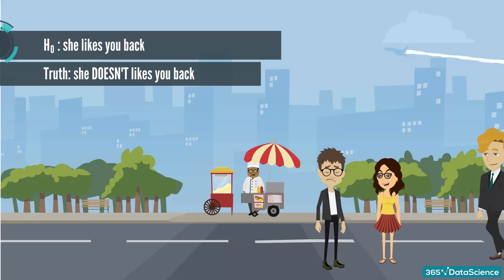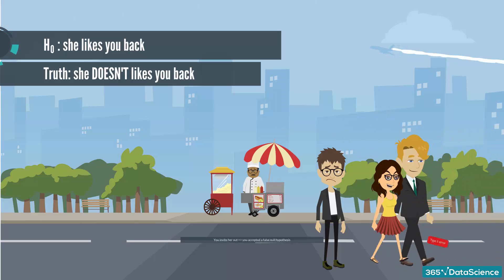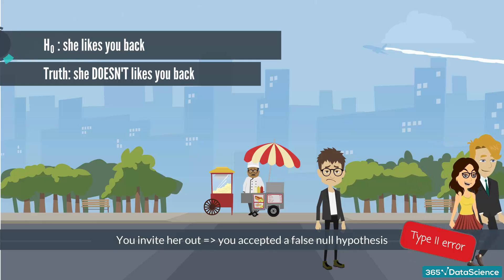She tells you that she has a boyfriend that is much older, smarter, and better at statistics than you and turns her back. You made a type 2 error.